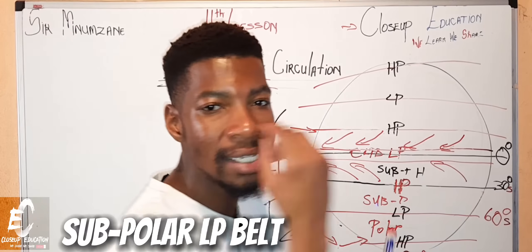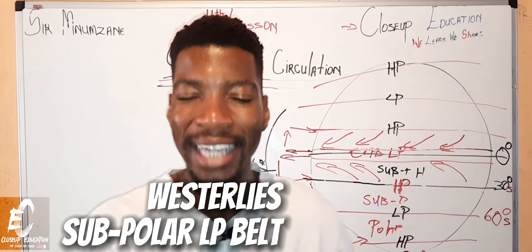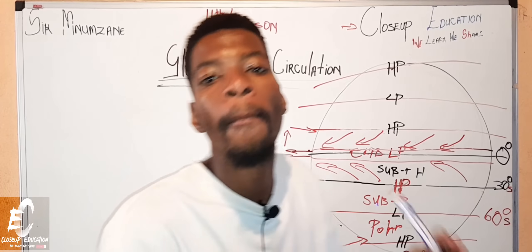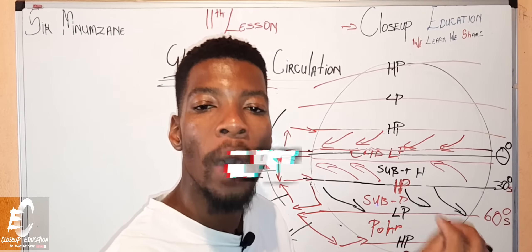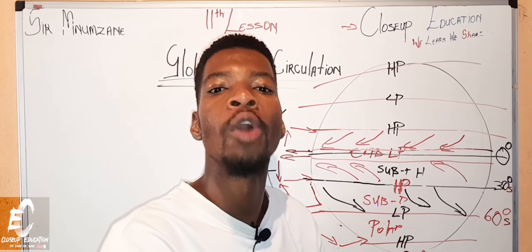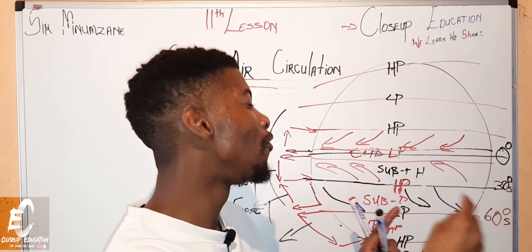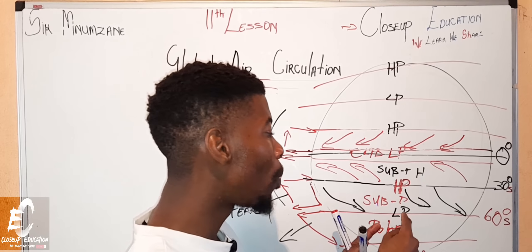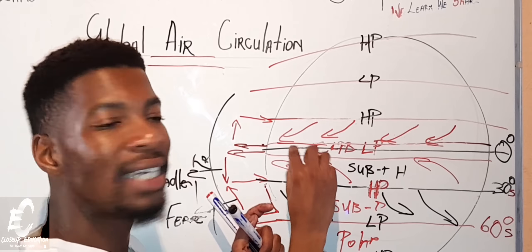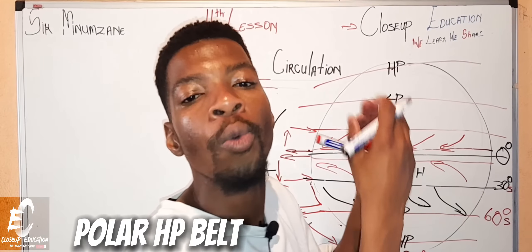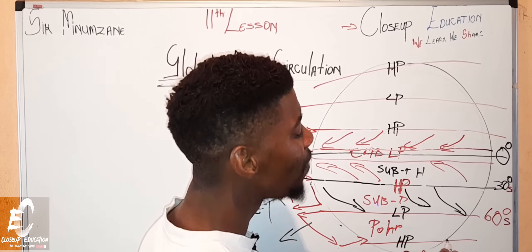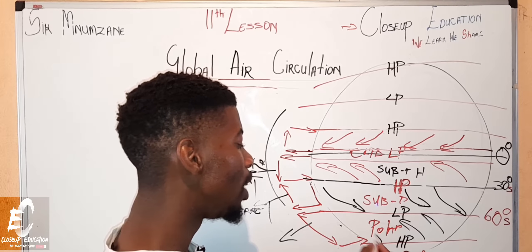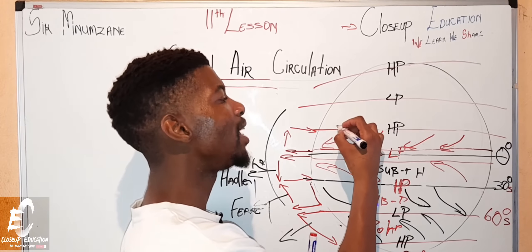Between 30 and 60 degrees we find the westerlies — that is where South Africa is located. The westerlies move from west to east, and they face toward the equator because air moves from high pressure to low pressure. Between 60 and 90 degrees we find the polar easterlies, which move in the opposite direction from the poles toward 60 degrees.